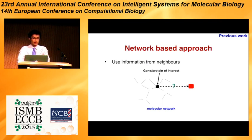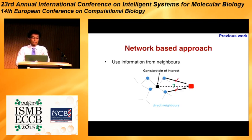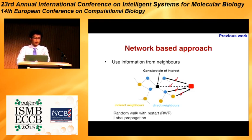There are many previous works that used the information from neighbors in the molecular networks to do prediction. For example, if many of the neighbors of a gene have been annotated to a function, then this gene is also very likely to be annotated by that function. This approach is called guilt by association. Beyond direct neighbors, we can also use the property of indirect neighbors using algorithms such as random walk with restart or label propagation.